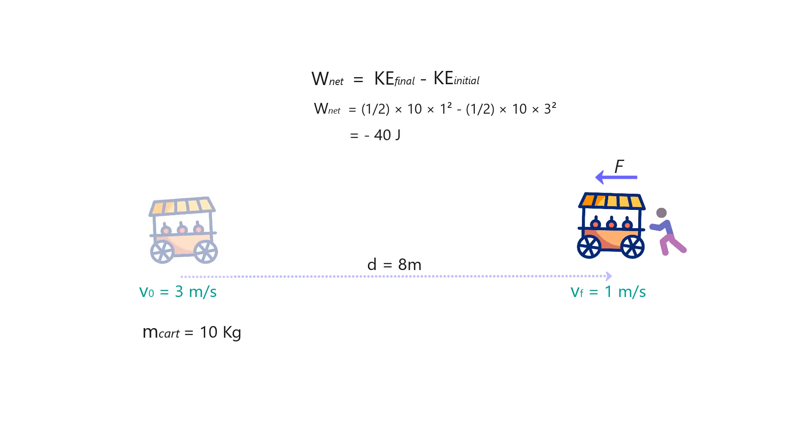the work done would be k final minus k initial, that would equal minus 40 joules, which therefore means that the force you applied has done negative work on the cart. And, of course, the magnitude of the force, if you calculate, would be 5 newton, but in the opposite direction.